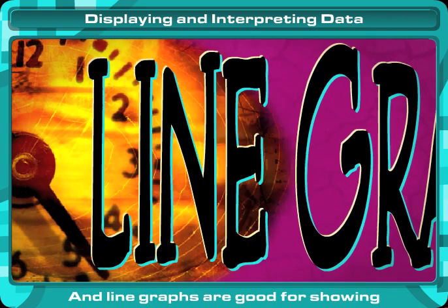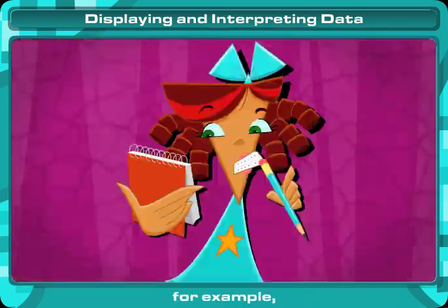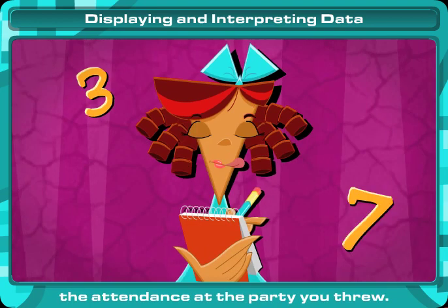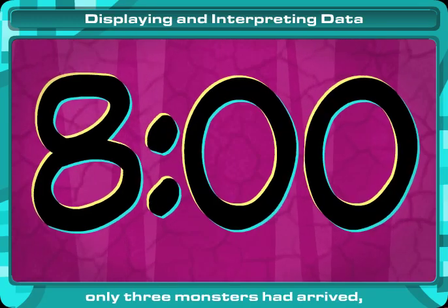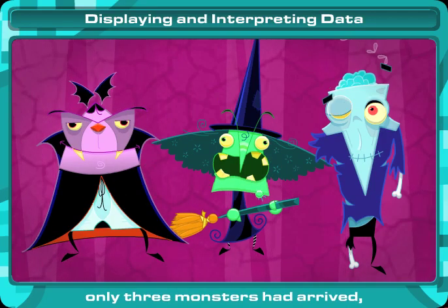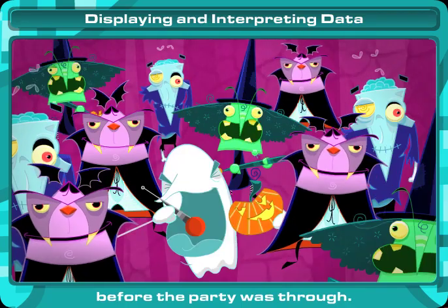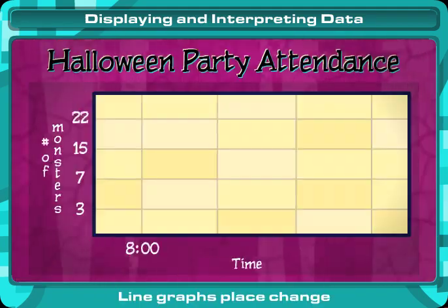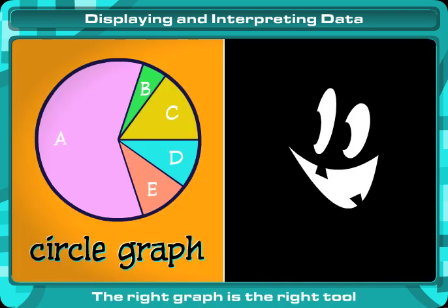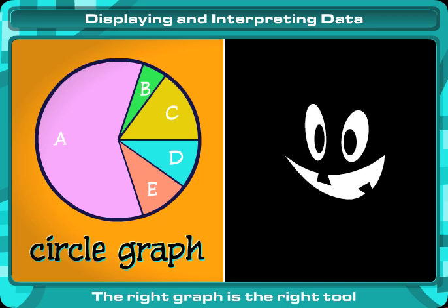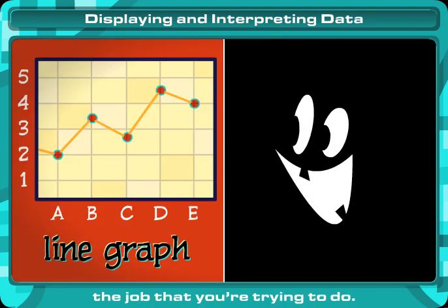Line graphs are good for showing change over time. For example, the attendance at the party you threw. By eight o'clock only three monsters had arrived, but more monsters showed up before the party was through. Line graphs display change in a very clear view. The right graph is the right tool for the job that you're trying to do.